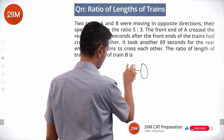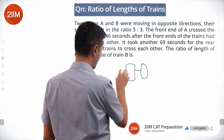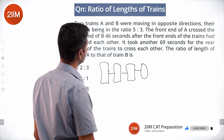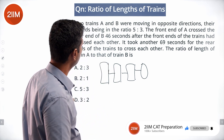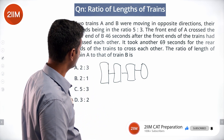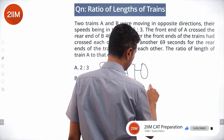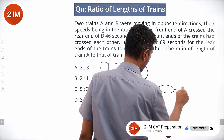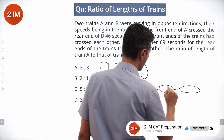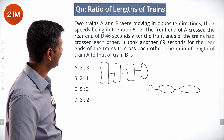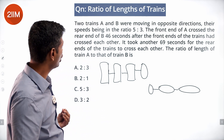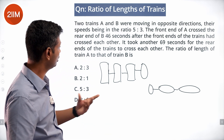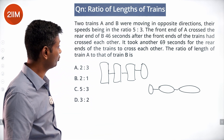Let us say this is train A, and this is train B, with speeds in the ratio 5 is to 3. The front end of A crosses the rear end of B in 46 seconds.